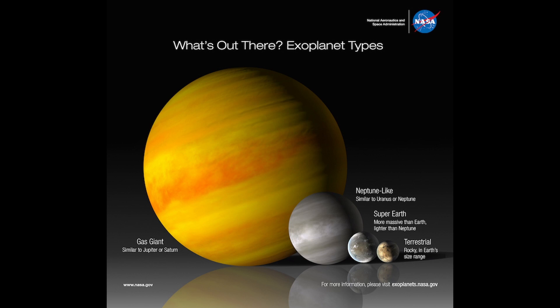A gas giant is like Jupiter. It's mostly made out of gas — mostly hydrogen and helium, like stars — but unlike stars, there's no nuclear fusion happening in Jupiter. Also, Jupiter actually has a rocky center. You can think of Jupiter as a very small rocky planet with a very large gaseous atmosphere.